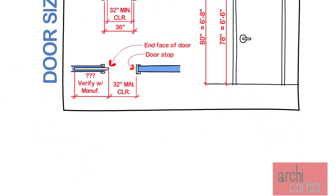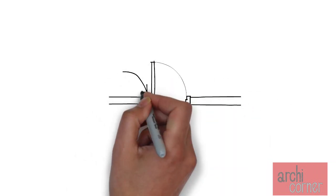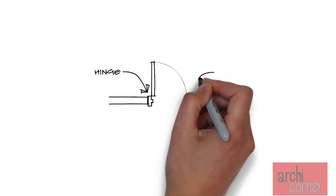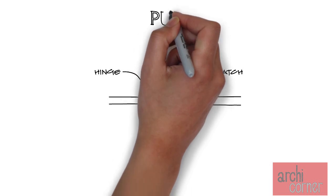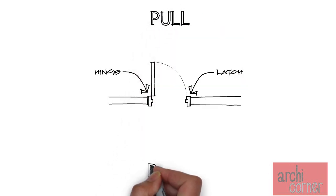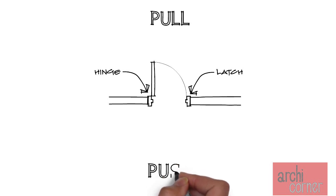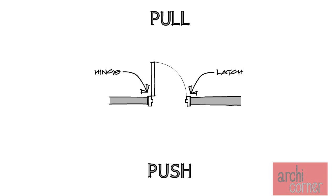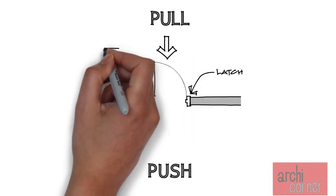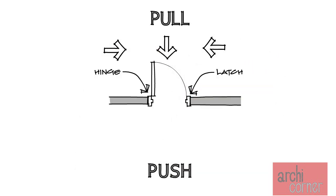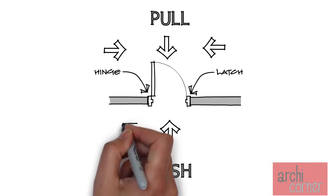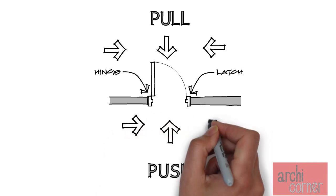Now let's move on to clearances. Let's first get some terminology out of the way. Here you see a door in the floor plan view. On one side of the door you have your hinge side; on the other side you have the latch side. You also have your pull side and your push side. With those terms out of the way, you can see that you can approach a door in at least six different ways: front approach on the pull side, hinge approach on the pull side, and latch approach on the pull side; and also front approach on the push side, hinge approach on the push side, and latch approach on the push side.